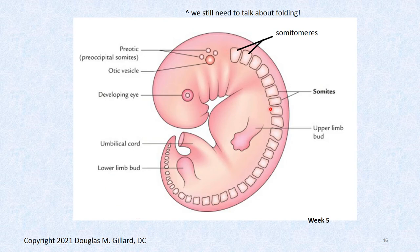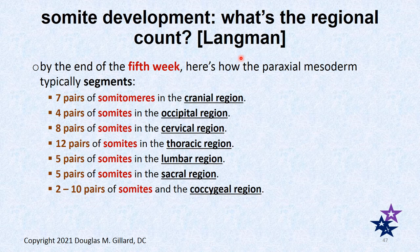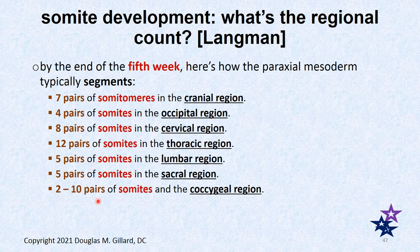So 38 pairs in total. The final count: seven pairs of somitomeres; four pairs of somites in the occipital region; eight pairs in the cervical region; 12 pairs in the thoracic region; five pairs in the lumbar region; five pairs in the sacral region; and anywhere from two to ten pairs — variable — in the coccygeal region.